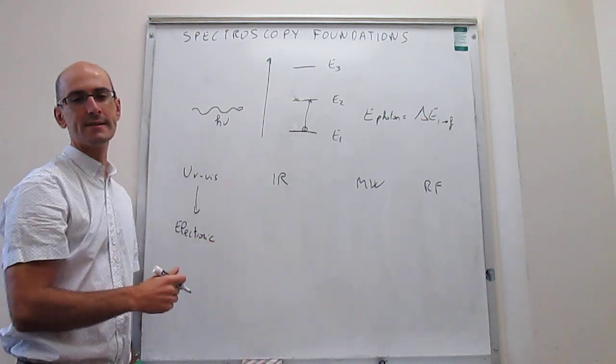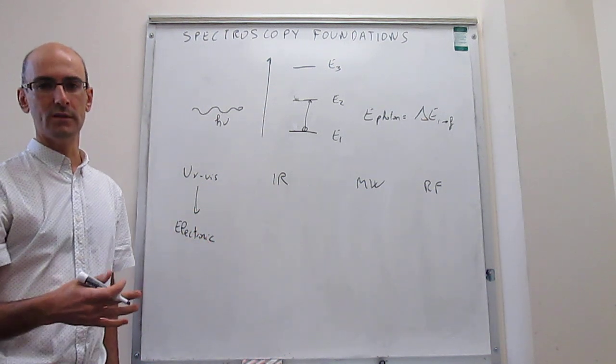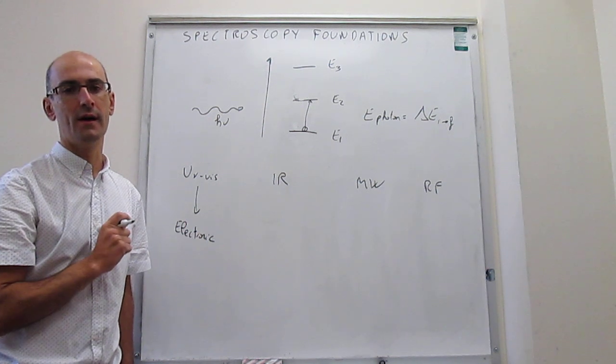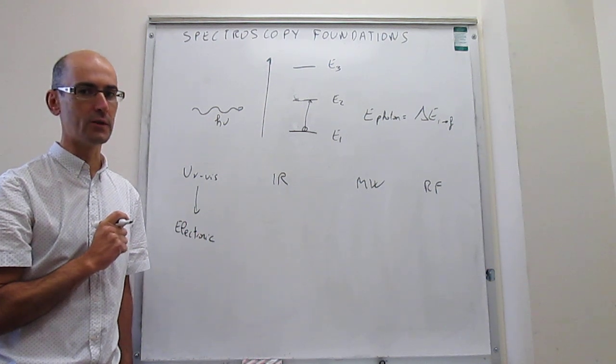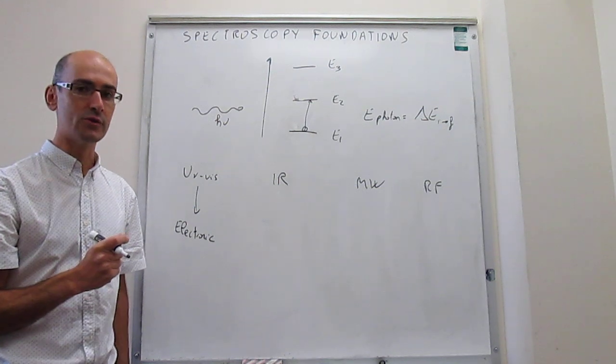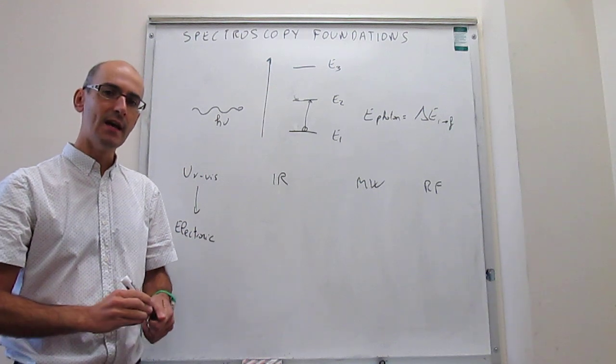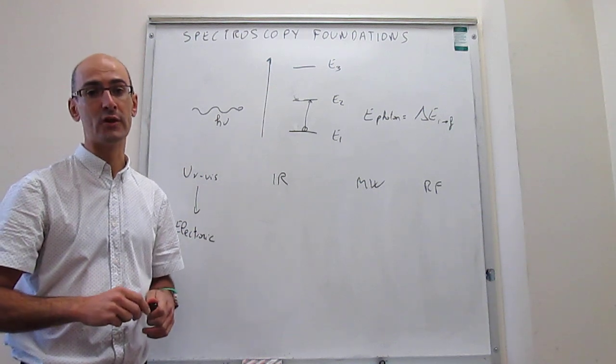Now, infrared is less energetic than UV-Vis, and what that means is that the electrons are actually not involved. Infrared, when you shine infrared radiation on a sample, on a molecule, the electrons actually don't change orbitals. They're not promoted. Instead, there's a different type of motion that gets engaged, and that is molecular vibrations.